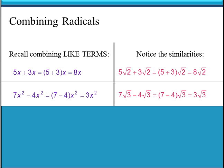Very similar with subtracting radicals. Here we have 7 square roots of 3 minus 4 square roots of 3. Since they're both square roots of 3, their radical parts are exactly the same, so we can subtract them by doing the subtraction between the 7 and the 4, and that tells us how many square roots of 3 we have. The radical part does not change — our answer is still in square root of 3 form. We started with 7 square roots of 3, take away 4 square roots of 3, and end up with 3 square roots of 3. Very similar to adding and subtracting like terms.